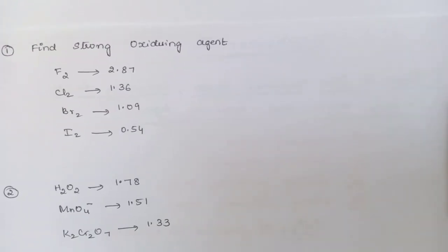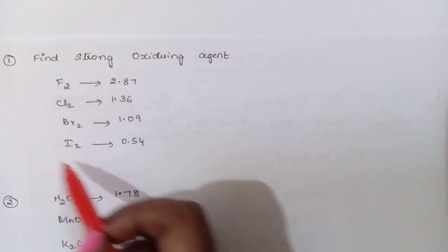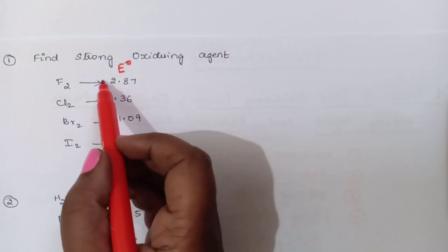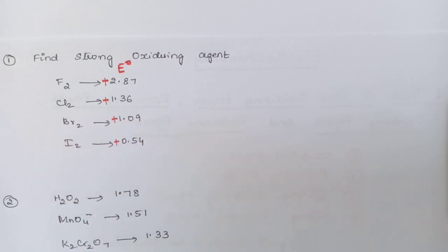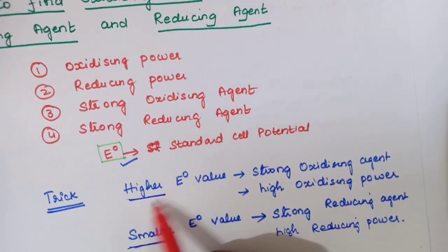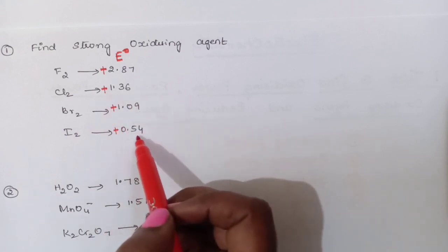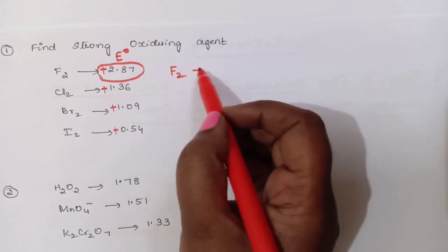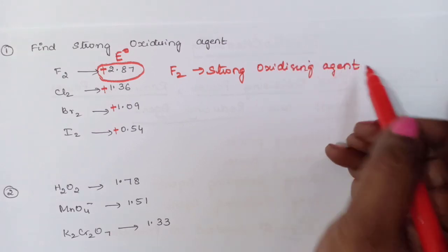Here the first question is: find the strong oxidizing agent. E0 values given are: fluorine = +2.87, chlorine = +1.36, bromine = +1.09, iodine = +0.54. Strong oxidizing agent means higher should be the E0 value. The bigger value is +2.87, therefore fluorine will be the strong oxidizing agent, and its oxidizing power will also be the highest.